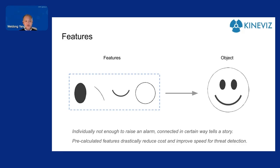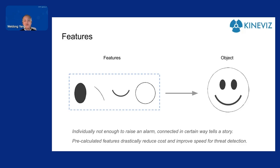The feature really is just the individual elements that you have — as I pointed out on the left, you have a dot, you have segments, a circle. Now, if you look at them individually one by one, that's not enough to say something is wrong or needs to raise an alarm. However, when they come together in a certain form, in a certain structure, it reveals that there's a threat behind it.